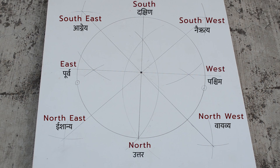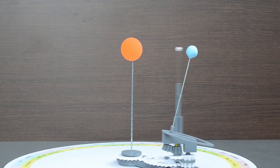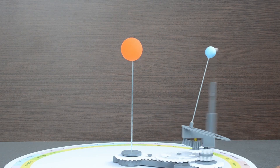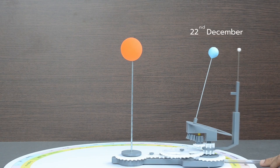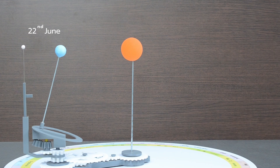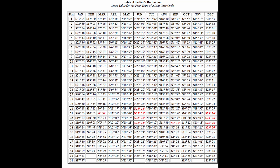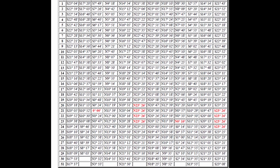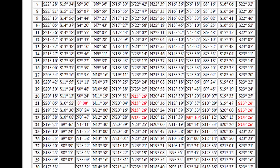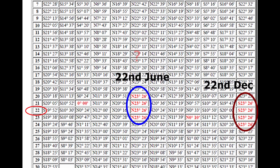Directions thus achieved are approximate directions, as there is a change in declination of the sun throughout the day. These steps will give you accurate results when carried out on solstices — summer solstice and winter solstice — as on these days the change in declination during the day is almost zero.